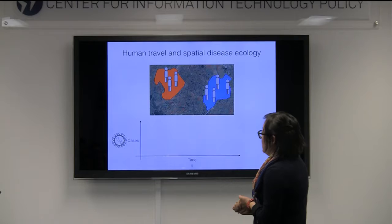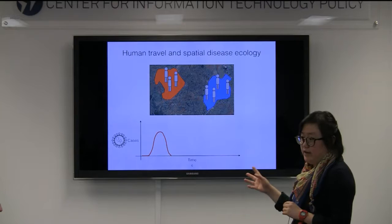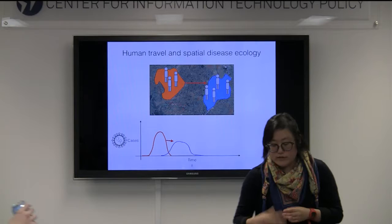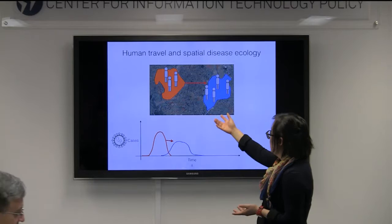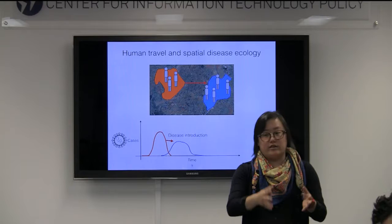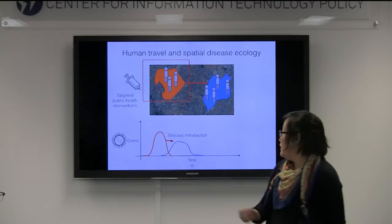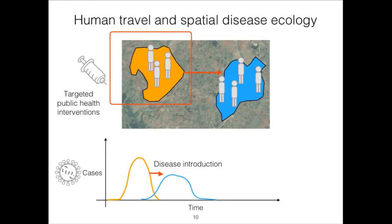If you have two different populations — one's orange and one's blue — and we're looking at cases over time, we see some outbreak in the orange location. Say the disease was never found in the blue location, but then over time we see an outbreak there. What we often infer is that somehow there was some introduction event — the disease went from the orange location to the blue location. For certain pathogens, that's normally only mediated by humans, so people are the ones that move it really far. We'd infer that some of the people who were in that location had moved to this other one, introduced the disease, and then we see an outbreak.